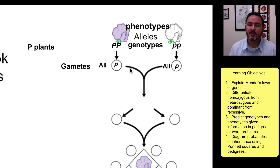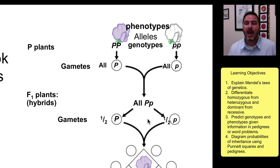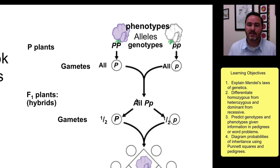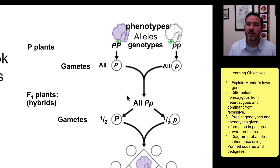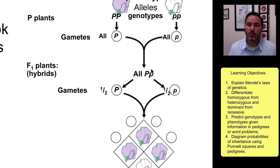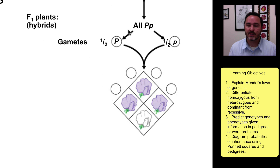When these come together in the F1 generation, every single plant is a big P, little P. And so what type of phenotype is that? It's purple flowered. And that's why he saw everything in the F1 generation was purple flowered.